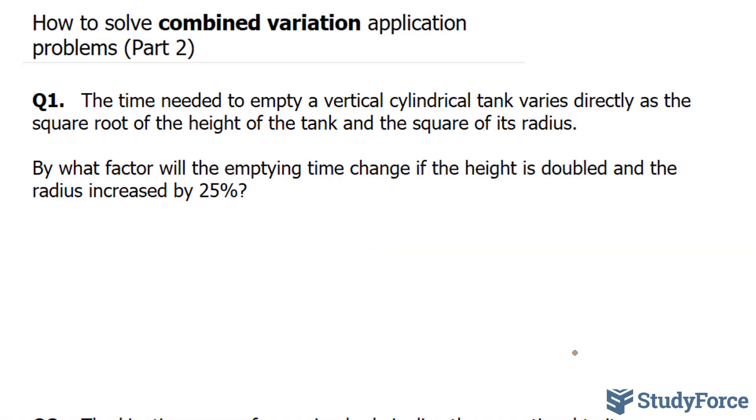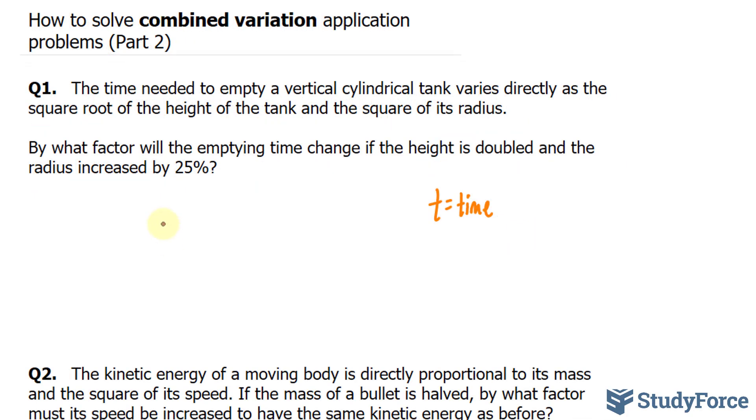The first thing I want to do to tackle this problem is assign letters for the variables. They tell us that the time, which I'll represent as t, to empty a vertical cylindrical tank varies directly, so I'll write down t is equal to k as the square root of the height, so I'll say h is equal to the height, and you always want to introduce a constant k, the square root of h.